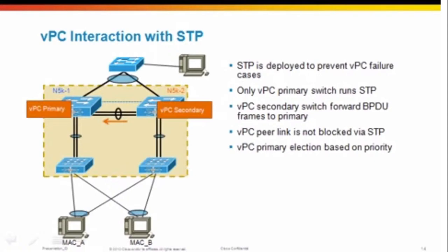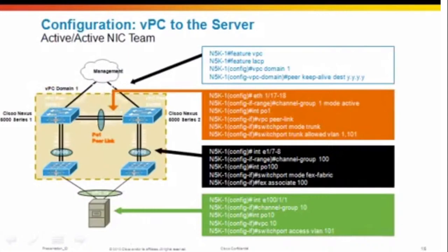Let's see two configuration examples. The first is VPC to the server — active-active NIC teaming. First, enable VPC with 'feature vpc' and enable LACP with 'feature lacp'. Configure a VPC domain number that must match on both switches — for example, 'vpc domain 1'. Then configure the peer keep-alive, which should run over the management 0 interface and management VRF. The syntax is 'peer-keepalive destination' followed by the IP address of 5K2, since we're configuring 5K1. The same configuration must be duplicated on the other switch.